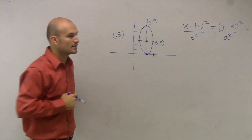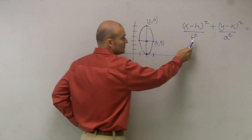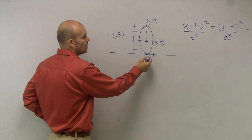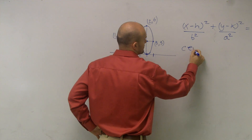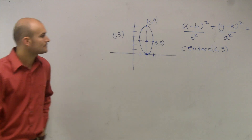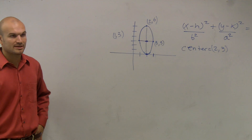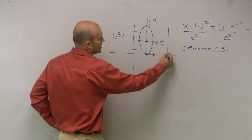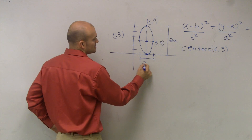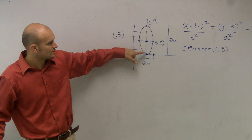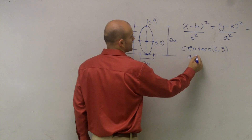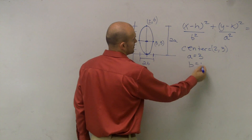Now we need to determine a couple of points: the value of a, the value of b, and the center. The center is pretty easy — we can just plot and go over one, two, up one, two, three. So the center equals (2, 3). The distance of the major axis is two a, and the distance of the minor axis is two b. So from the center to the vertex, a equals 3, and b equals 1.